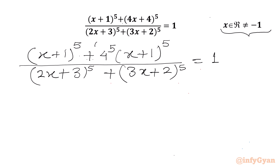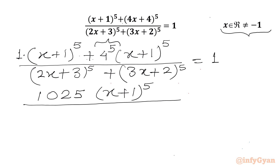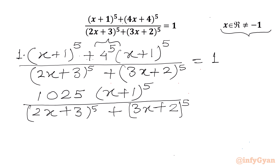Now 4 power 5 is 1024. And here we have 1, so I can write directly: this will be equal to 1025 times (x+1)^5 over (2x+3)^5 plus (3x+2)^5 equal to 1.